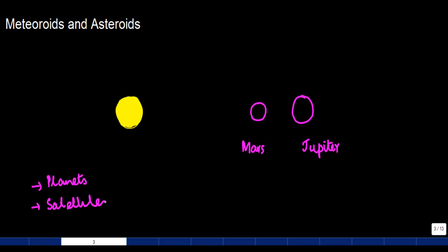and certain satellites which revolve around the Sun. Just like we spoke earlier, these planets revolve around the Sun following a fixed path. There are certain satellites also, asteroids, and I'm first talking about asteroids.